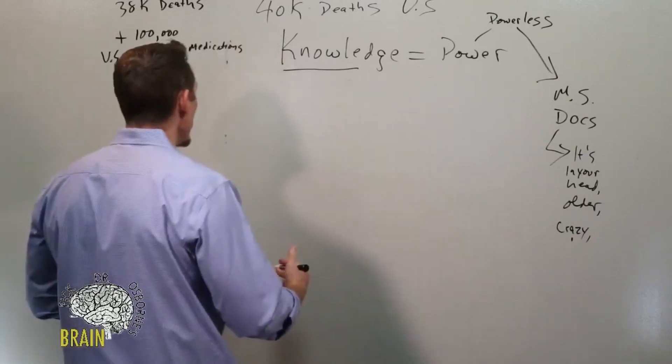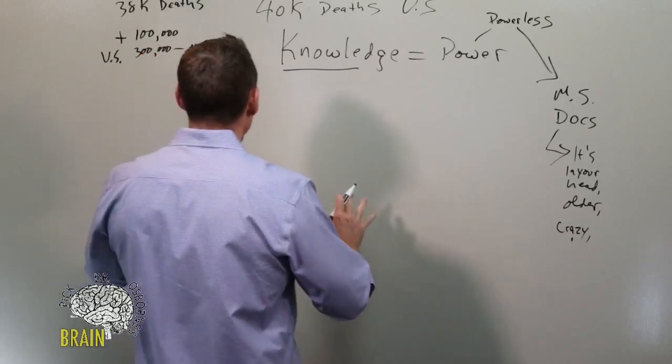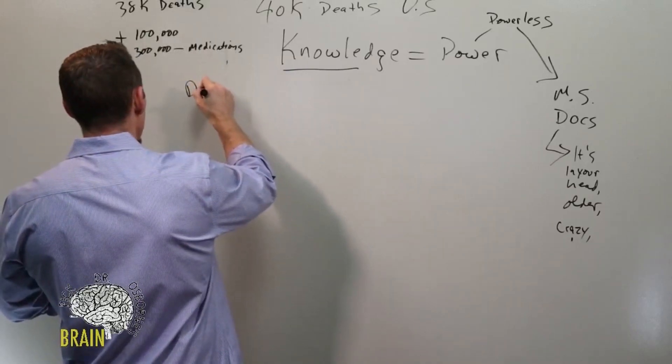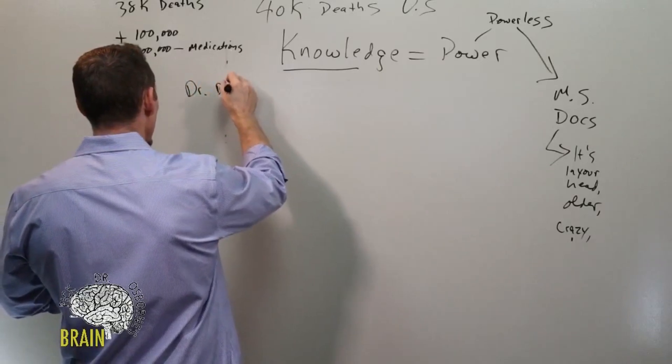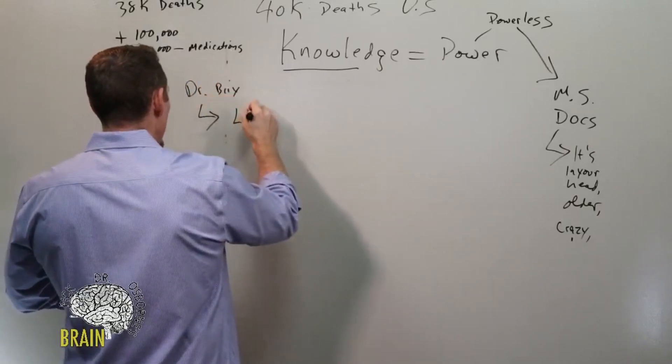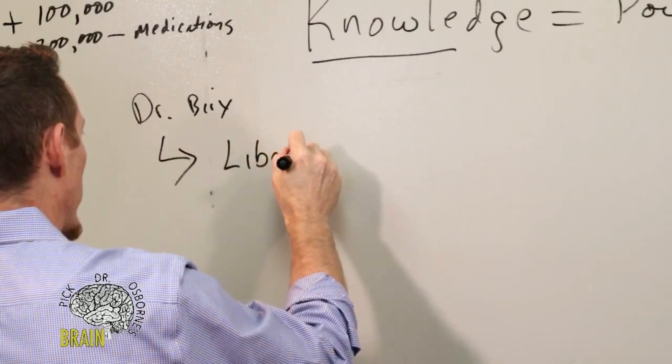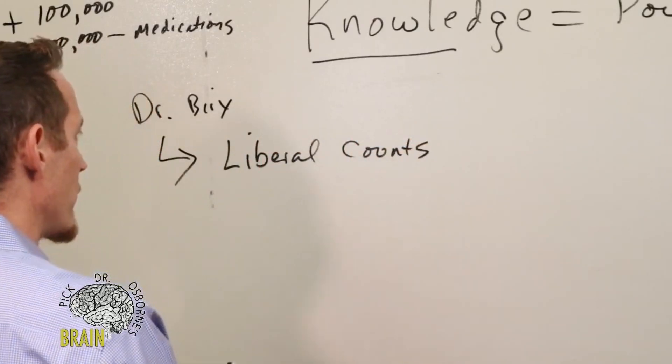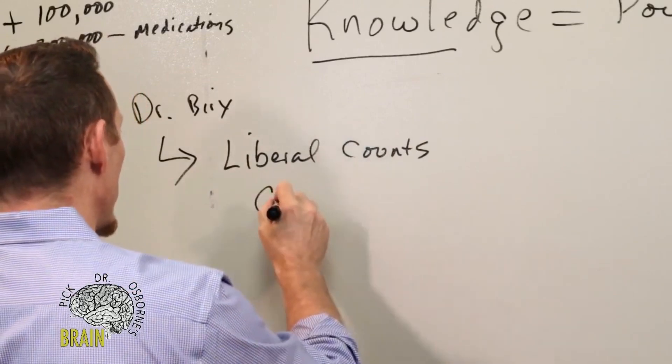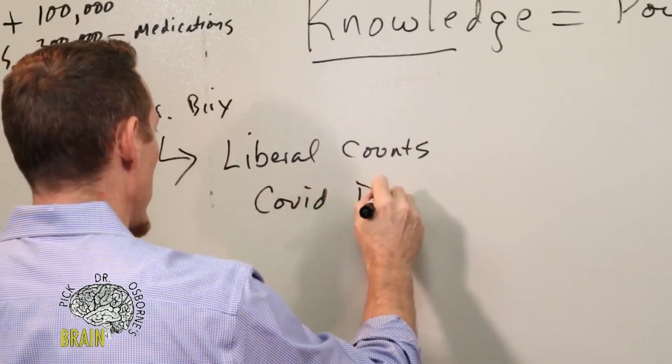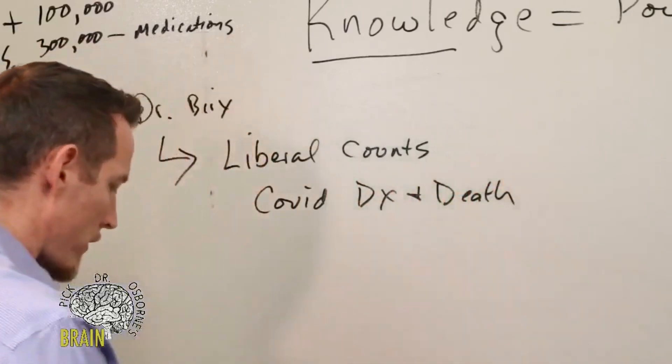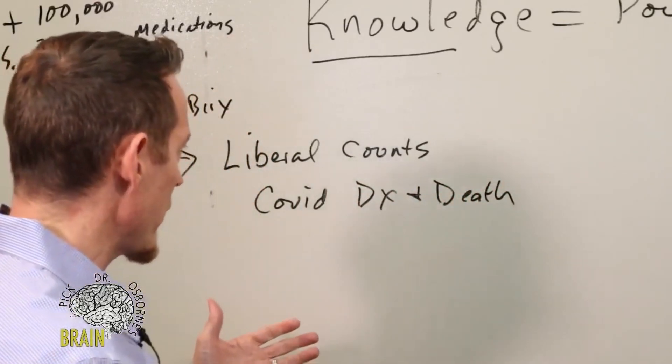Here's what we know right now. I think her name is Dr. Birx. She wants liberal counts, and this isn't me making this up—this is directly out of her mouth. She said this last week. She wants liberal counts of COVID diagnosis and death rates, and she was on the podium last week saying yes, we're counting this very liberally right now, and she's encouraging it.